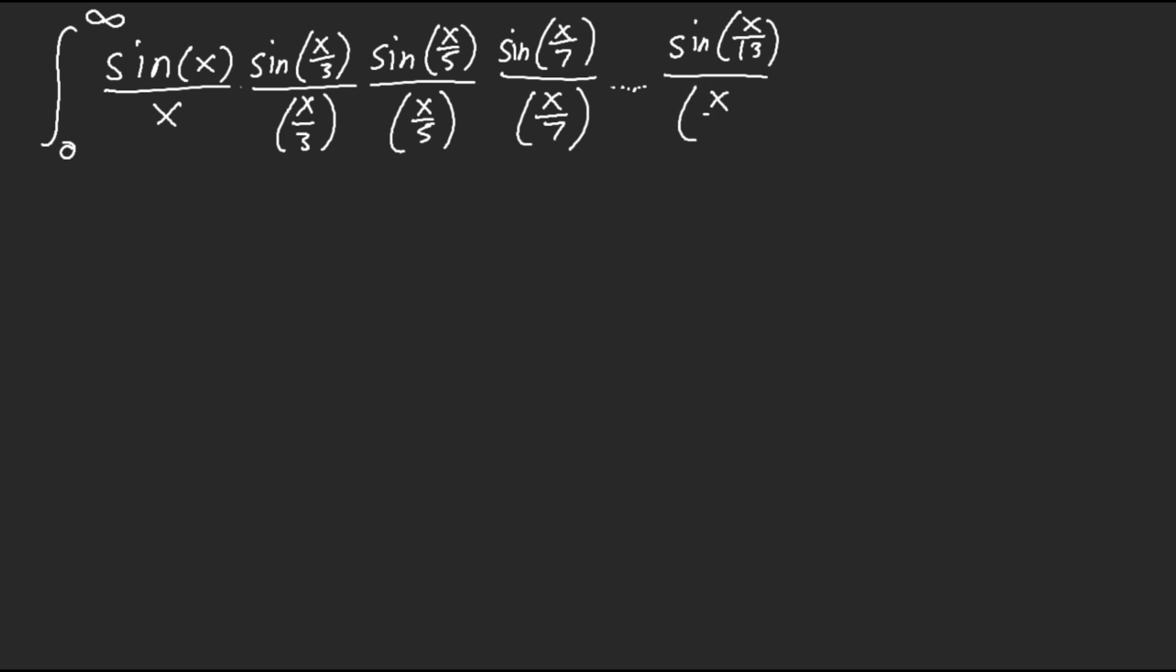It keeps on going until it stops at sine over x over 13. So here at x over 13, we get pi over 2. But anywhere past that, it doesn't equal pi over 2 anymore, it equals something else. So no more than 13.